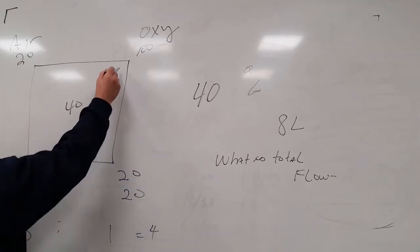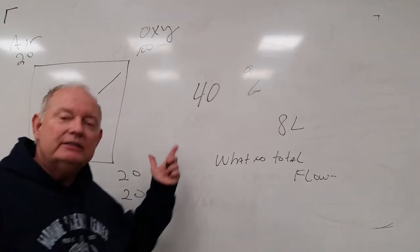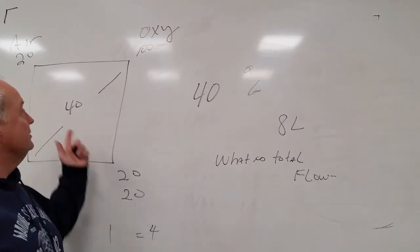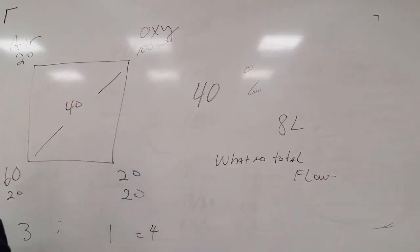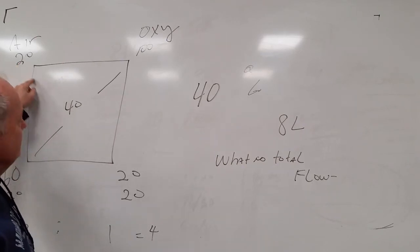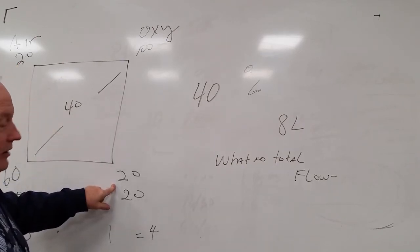And then cross-subtract the smallest from the biggest. The smallest from the biggest, and you're going to get 60 down here. And the smallest from the biggest, you're going to get 20 down here.